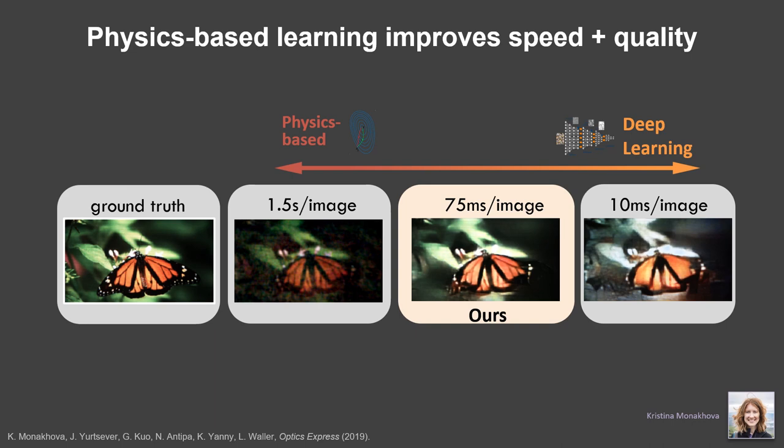What was really nice was that we could show that this blended version of physics-based learning can be fairly fast and also much higher quality in the image reconstructions. So you kind of get the best of both worlds by using physics in conjunction with deep learning. This is for image reconstruction.